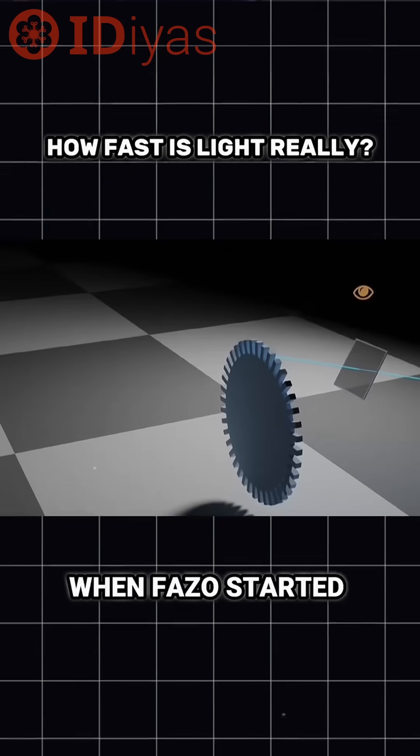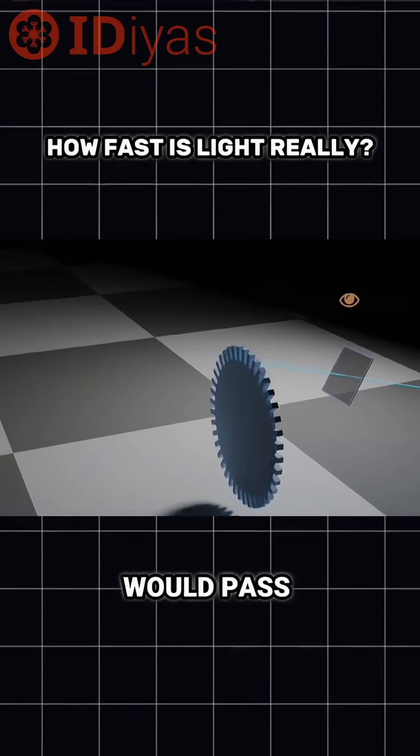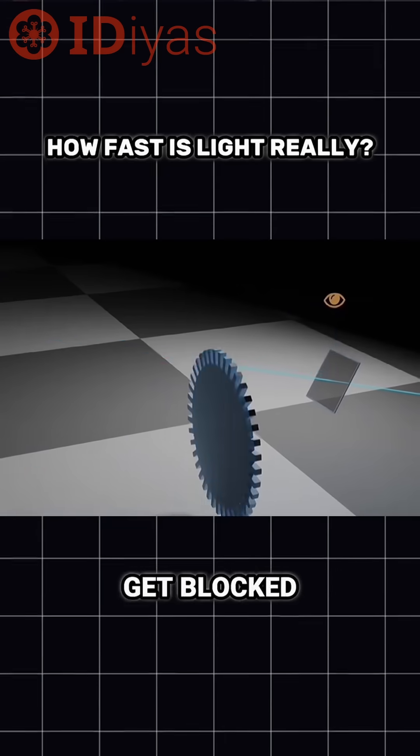But here's the twist. When Fizeau started spinning the wheel, the light began to flicker. Because sometimes the returning light would pass through a gap, and sometimes it would hit a tooth and get blocked.